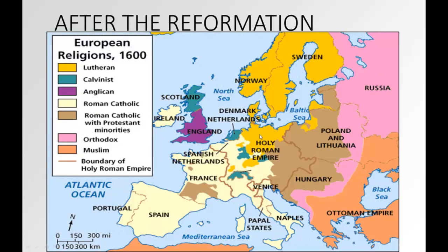After the Reformation, you can see on the map where Lutheranism is in gold, Roman Catholicism in yellow — obviously Italy. Calvinists are in teal. There are still Catholic majorities but Protestant minorities throughout. The Ottomans are out here with Eastern Orthodox and Russian Orthodox. And in red-orange are Muslims or Islam. That's kind of what Europe looked like after the Reformation.